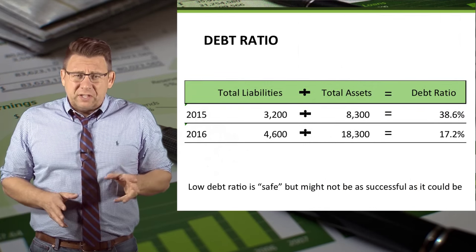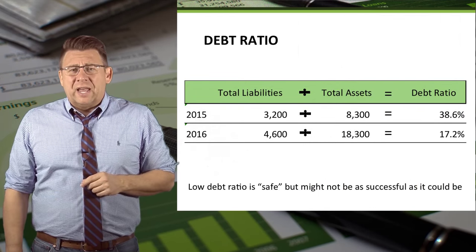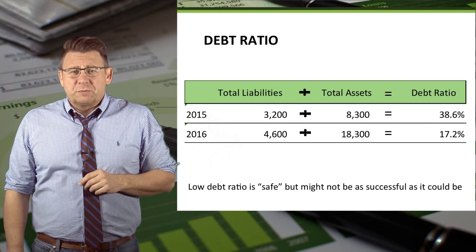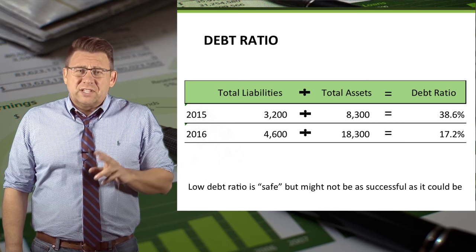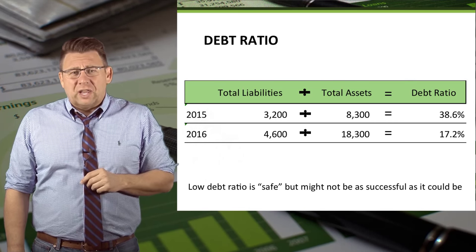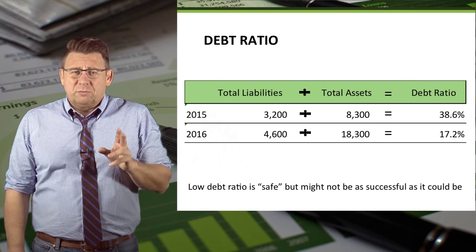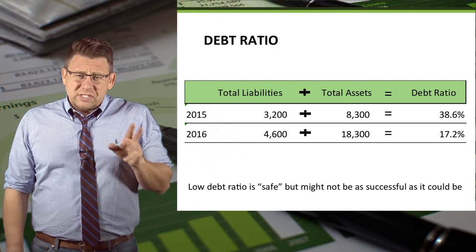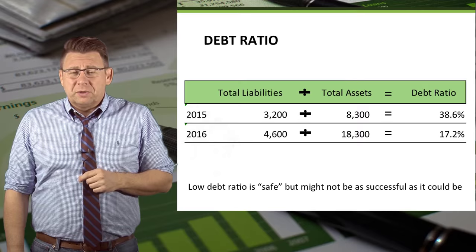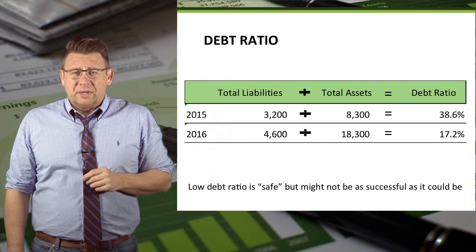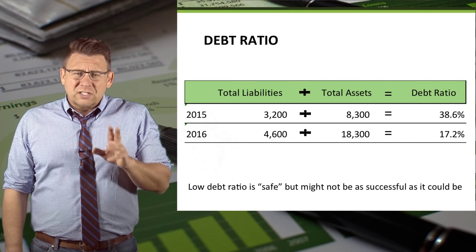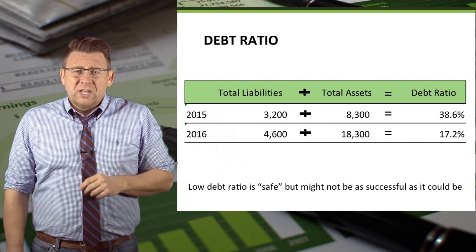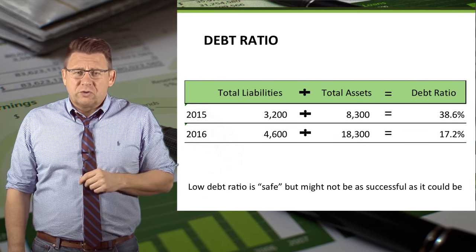For 2015, total liabilities divided by total assets gives us a debt ratio of 38.6%. In 2016, total liabilities divided by total assets gives us a debt ratio of 17.2%. These ratios are low, which is safe because it means the company should be able to make its debt payments even during economic downturns. But it also means that this company isn't as efficient or as profitable as it could be, because it's not using leverage to increase profits.